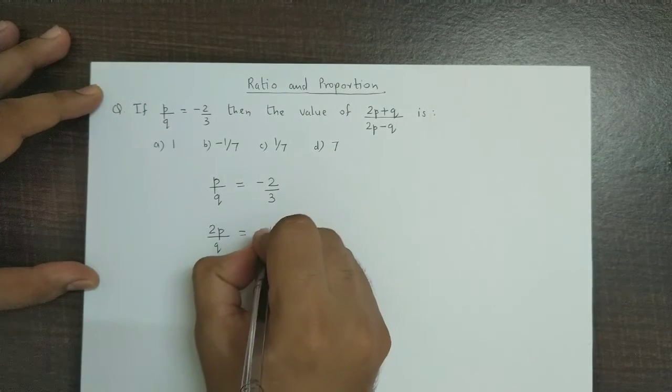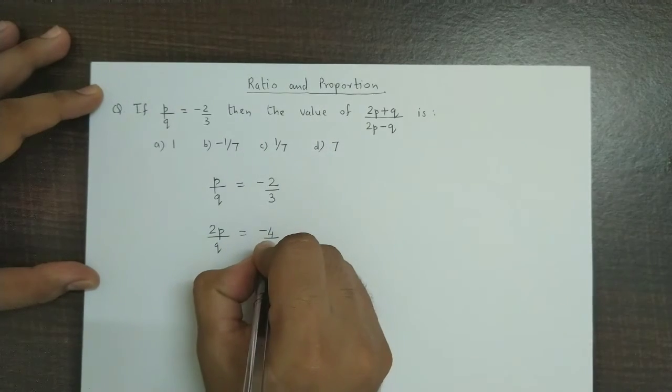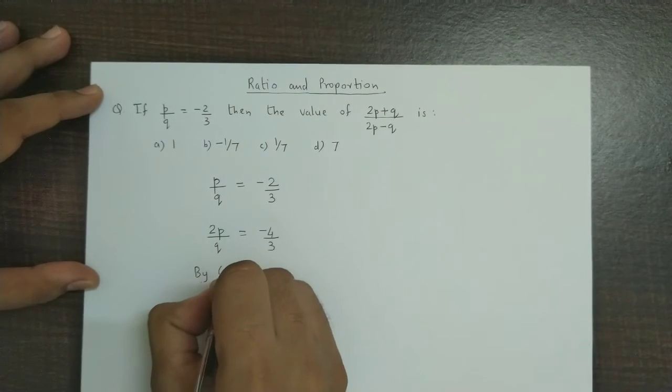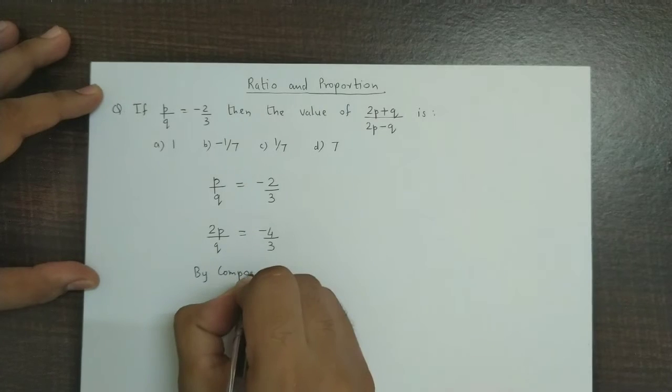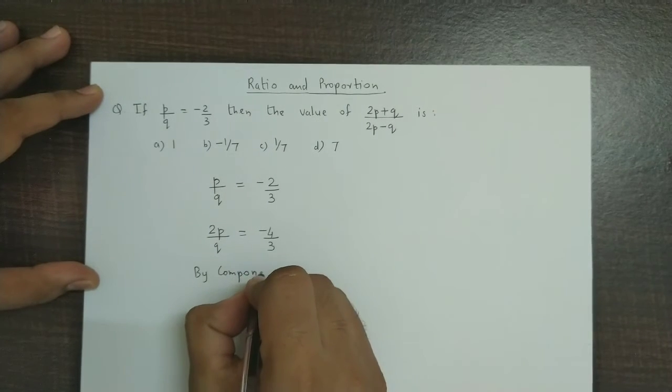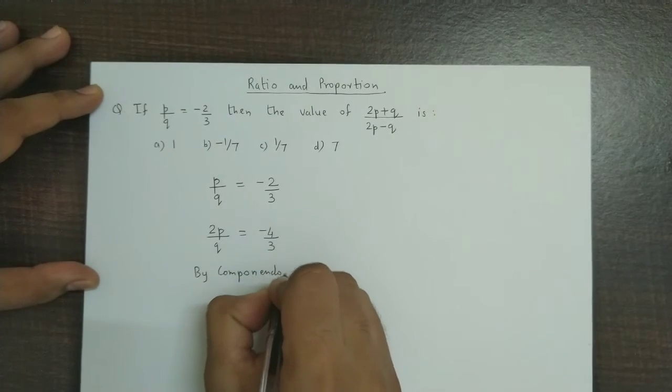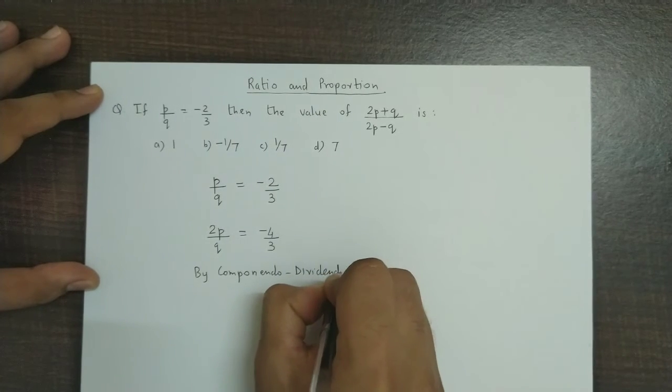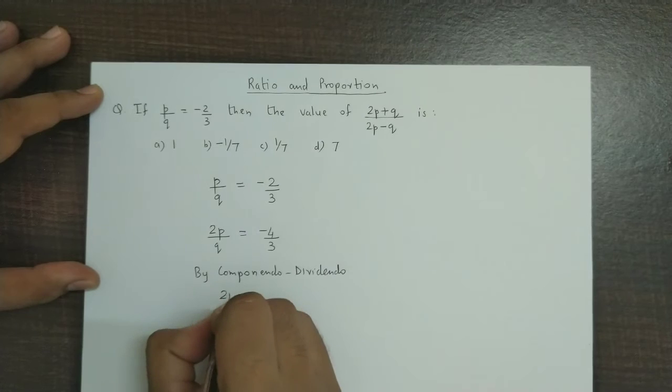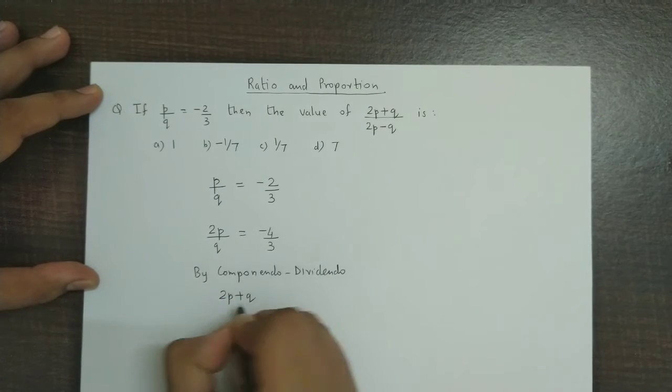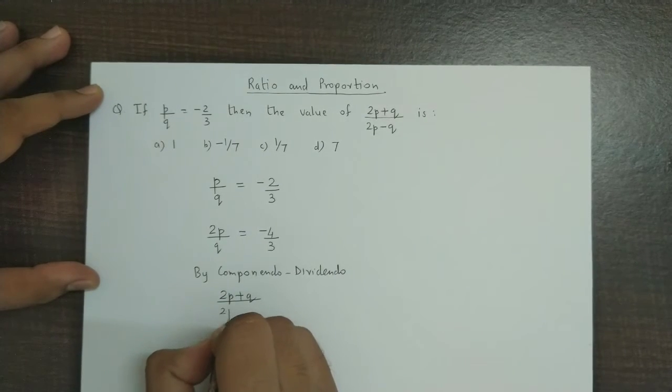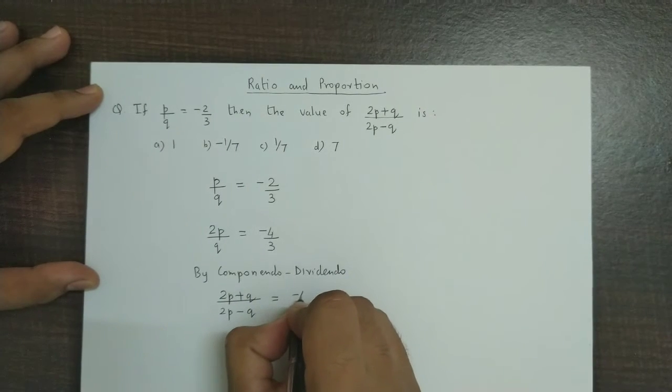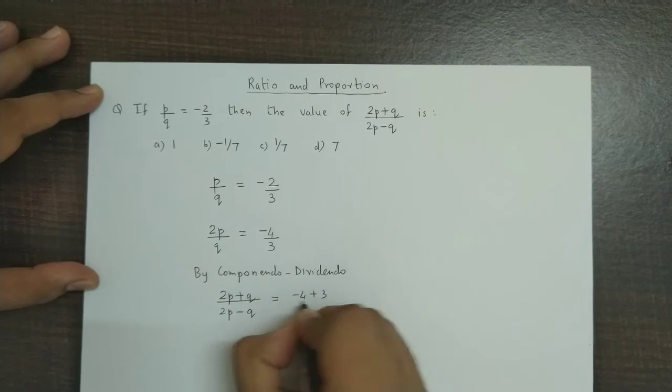And now we could use componendo-dividendo on both sides. So by componendo-dividendo we get (2p+q)/(2p-q) and on the right-hand side (-4+3)/(-4-3). Therefore, the value for (2p+q)/(2p-q) is equal to...